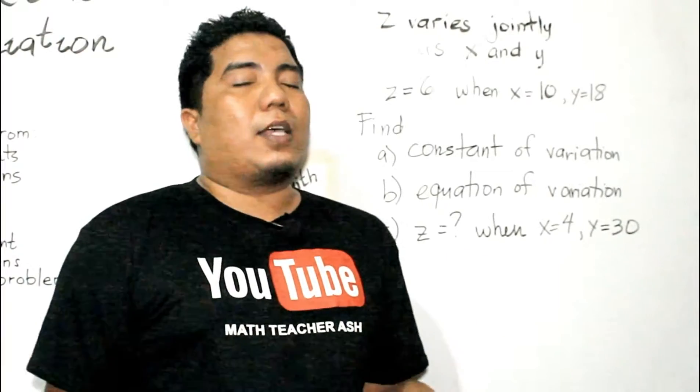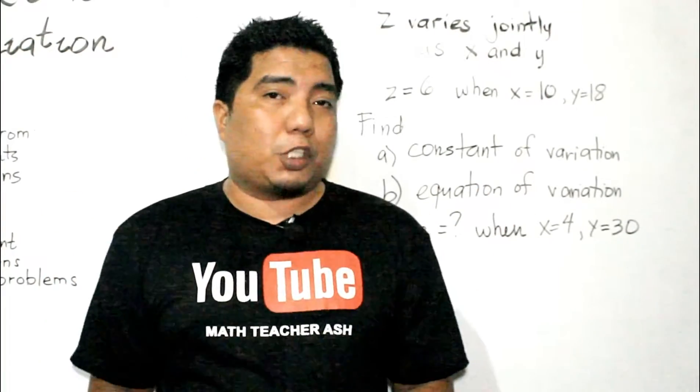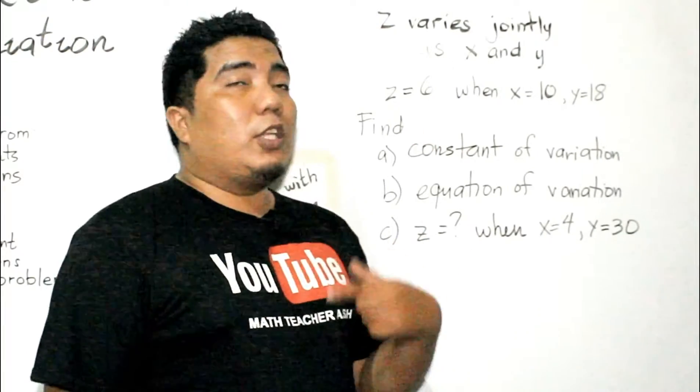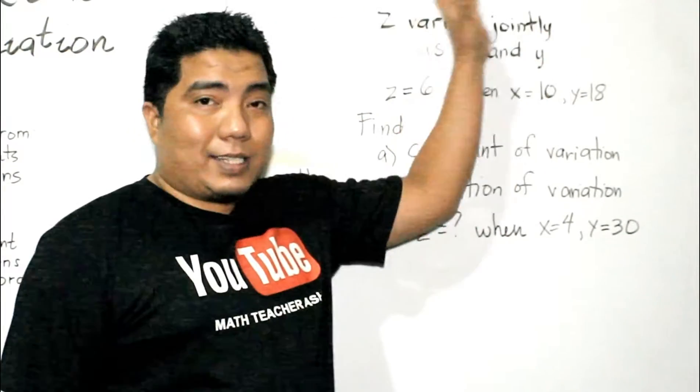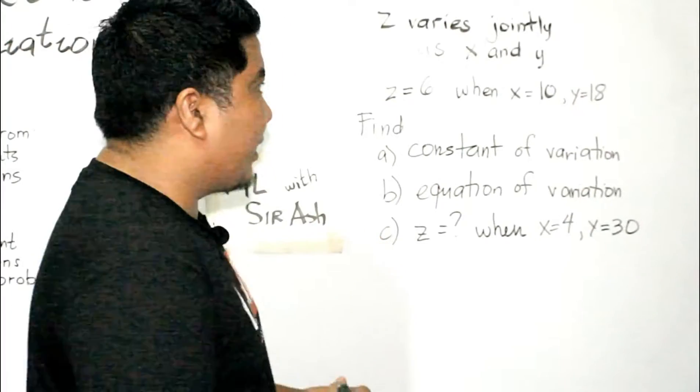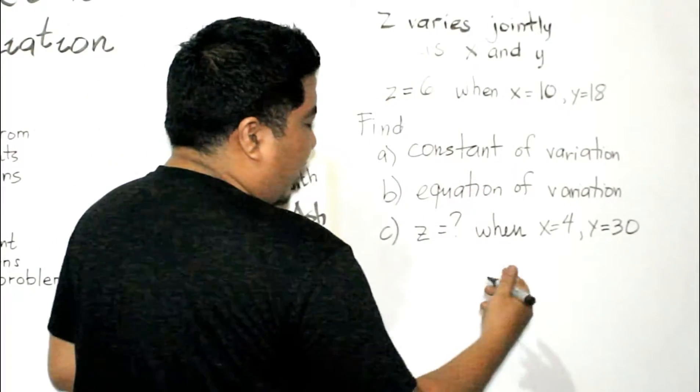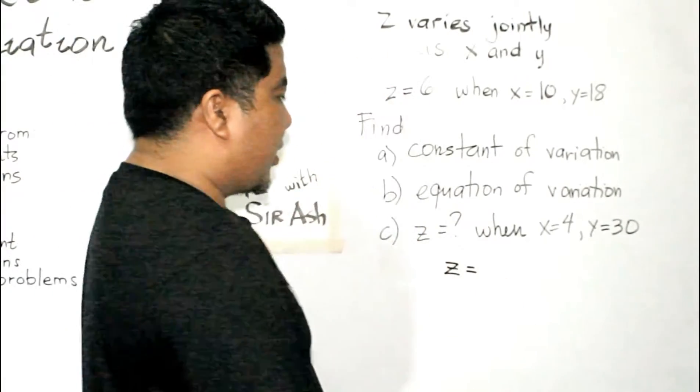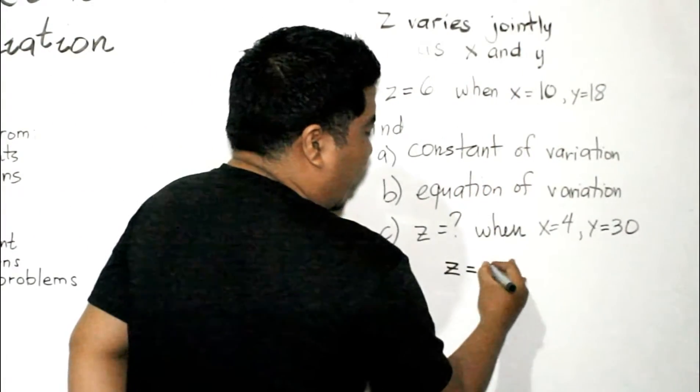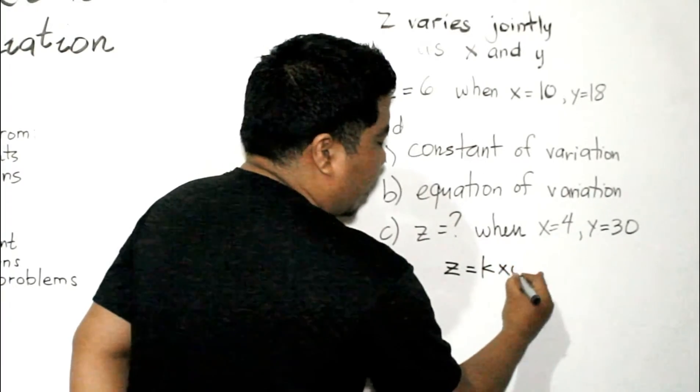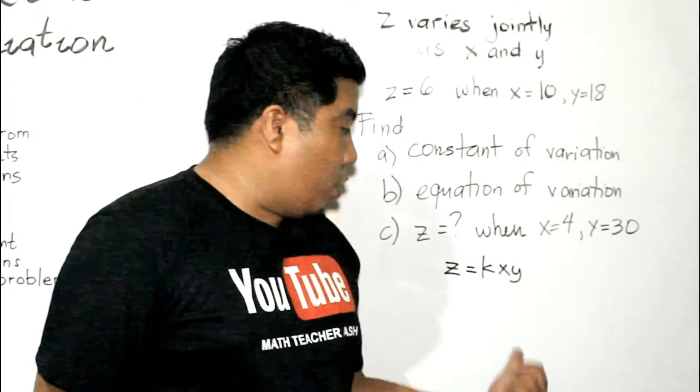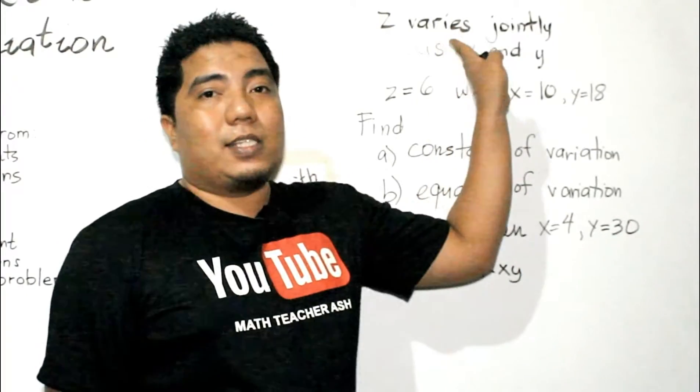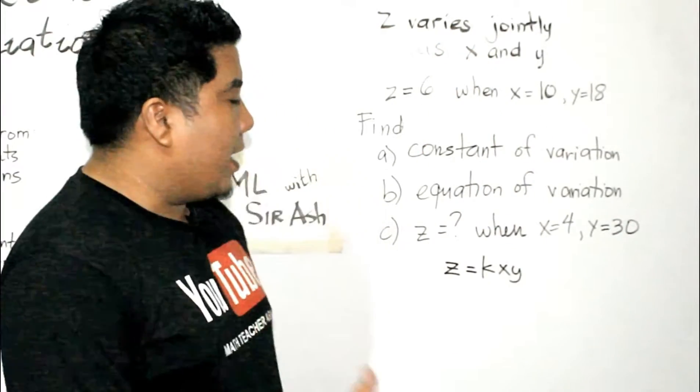Now, the same concept or the same technique as what we did in our inverse variation, what you need to do first is you need to translate this statement. So, how do we translate it into a mathematical statement? Since z is already the first letter being discussed, that is z equals k times x times y. So, this will be your translation or mathematical equation for this statement. Easy, right?